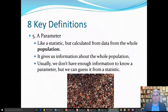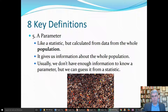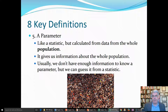In contrast to the sample, we have the parameter. Like a statistic, it describes a group of people, but the parameter is calculated from the data as a whole — from the population. Just like statistic goes with S for sample, parameter goes with P for population. It gives us information about the whole population. Usually, we don't have enough information to know a parameter — like getting the average shoe size of all APU students would require 10,000 data points — but we can estimate parameters from statistics.